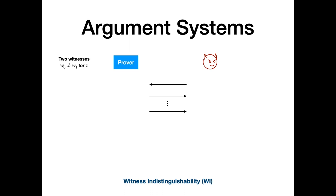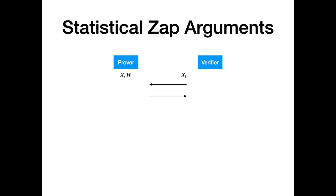Witness indistinguishability says that for any two different witnesses for the same statement x, if the prover chooses one of these two witnesses at random, then any malicious verifier should not be able to tell which witness was used. In this talk, we'll focus on a particular type of argument system called a statistical zap.